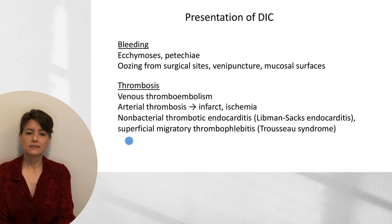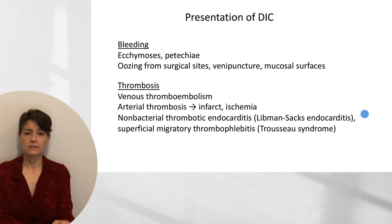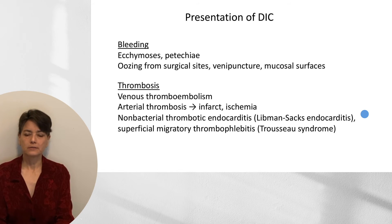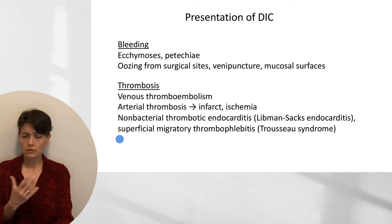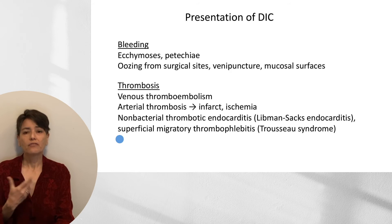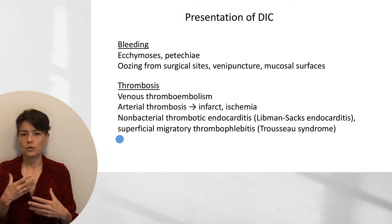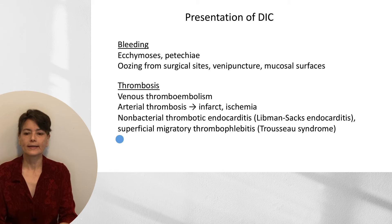Two things we see in malignancies are non-bacterial thrombotic endocarditis, also known as Libman-Sachs endocarditis — sterile vegetations on heart valves that can disrupt laminar flow and form a nidus for bacterial colonization, leading to infective endocarditis. Another possibility is superficial migratory thrombophlebitis, also known as Trousseau syndrome, where a patient may present with thrombophlebitis of one limb that resolves and is followed by thrombophlebitis elsewhere — occurring as tumors elaborate procoagulant factors.